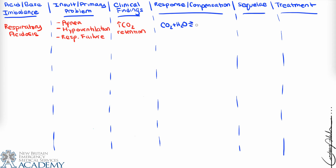Looking at the carbonic acid bicarbonate buffer system in the blood: an increase in CO2 will throw the reaction out of balance and drive it to the right. An increase in CO2 increases the conversion of CO2 and water to carbonic acid, which in turn increases the production of hydrogen ions and bicarbonate ions.